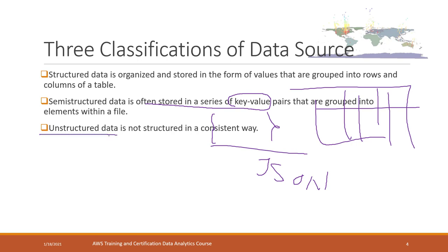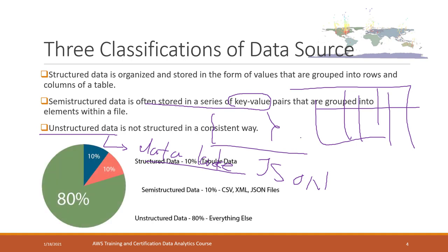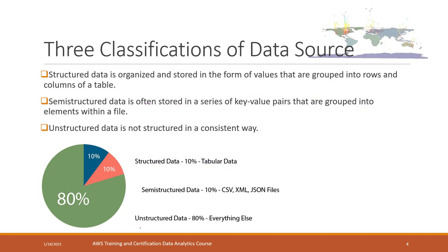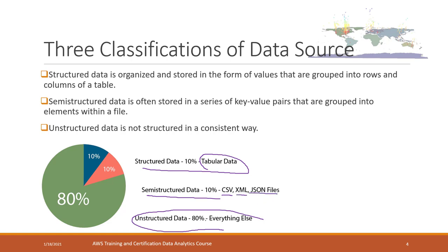Unstructured data is normally stored in a data lake, which is a relatively new concept. It is important to know the different data sources. It turns out that most data is unstructured. To summarize: structured data includes tables; semi-structured includes CSV files, XML, JSON data; and unstructured includes anything else like videos, etc.